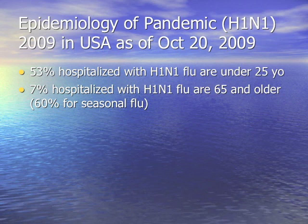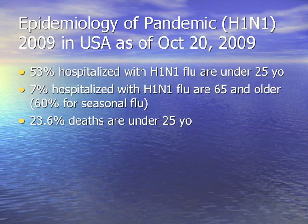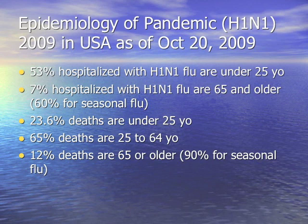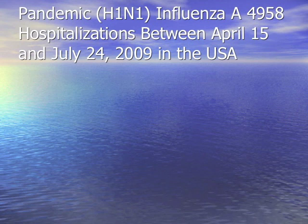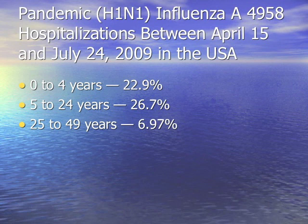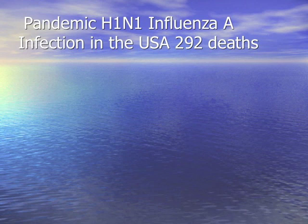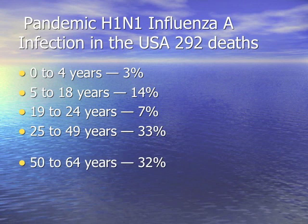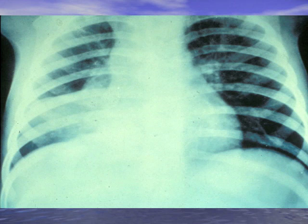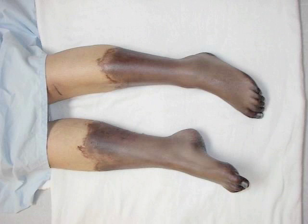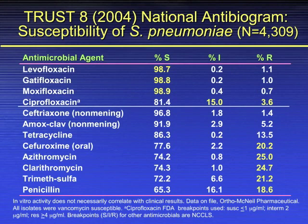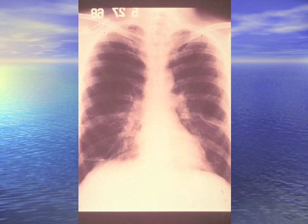With H1N1, notice how many hospitalized patients were young, with the elderly representing only 7% versus 60% in seasonal flu. Deaths were the exact opposite — 12% in the elderly for H1N1 versus 90% for seasonal flu — the reverse of what everyone expected. This is pneumococcal pneumonia, which can cause purpura fulminans, especially without a spleen. Quinolones have great coverage except Cipro — remember that's the big hole in therapy.